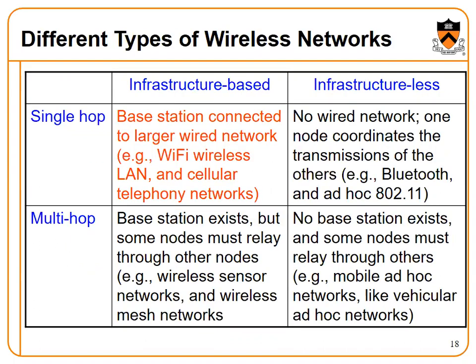Single-hop networks have a base station connected to a larger wired network — for example, Wi-Fi, wireless LAN, and cellular telephone networks. Infrastructureless stations have no wired network; one node coordinates the transitions of others — for example, Bluetooth and ad hoc 802.11.